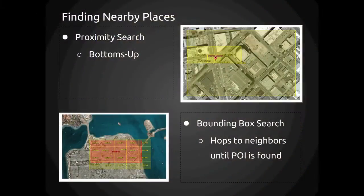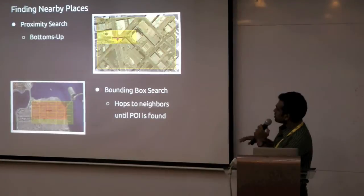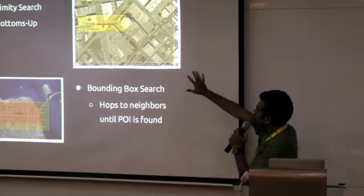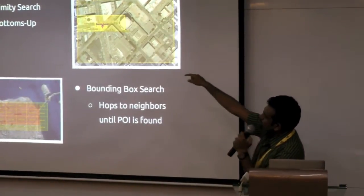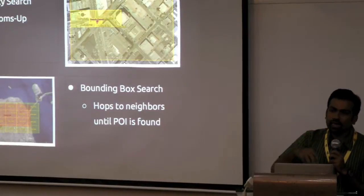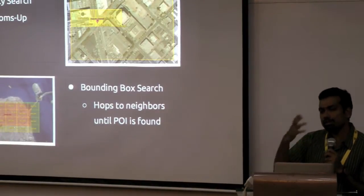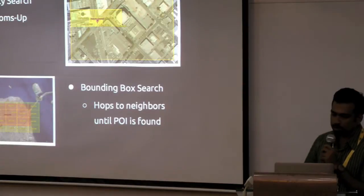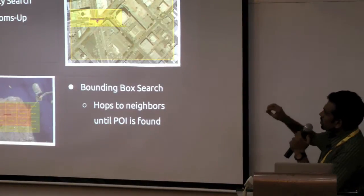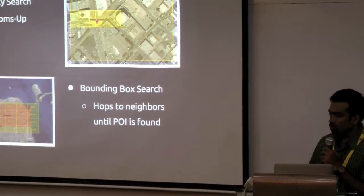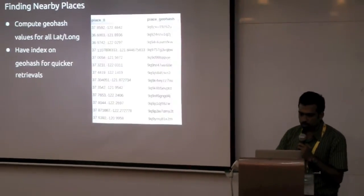To find nearby places, this system gives two methods. One is proximity search, which is a bottoms-up approach — you start with that point and keep increasing the zoom level or decreasing the proximity until some point comes into the same geohash. The other is bounding box expansion: you go one level, then for each of those you go the next level and do it. It's just a choice of which approach you want to follow.